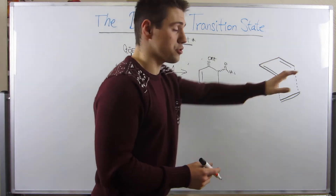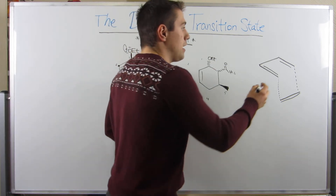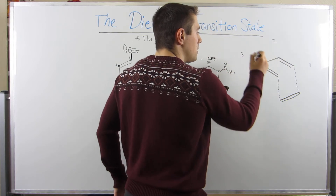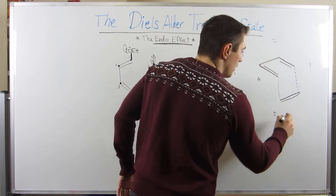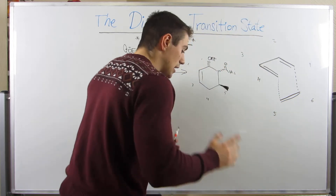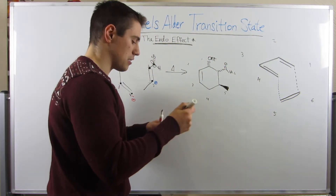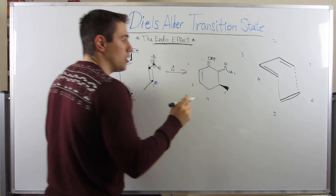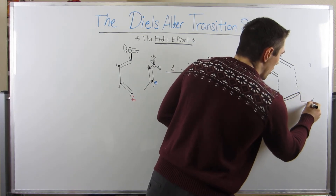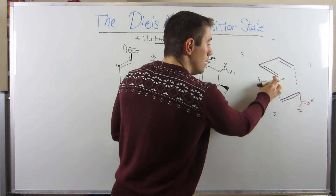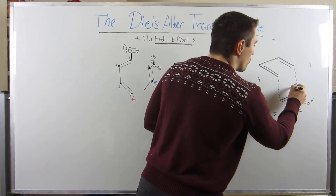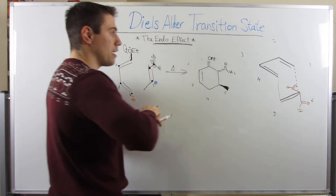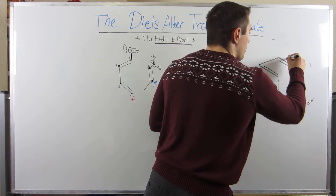Let me show it to you on this picture, because that was a lot of words. So if this is position one over here — this carbon — position two is this carbon, position three, position four, position five, and position six. Here's what I'm trying to say. Basically, at carbon number six, with this aldehyde, we have two options. We can put the carbonyl going out here, where he's not underneath the diene.